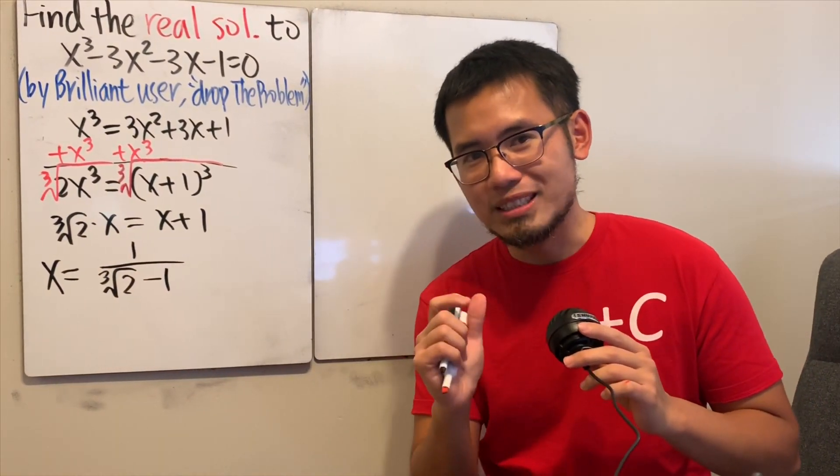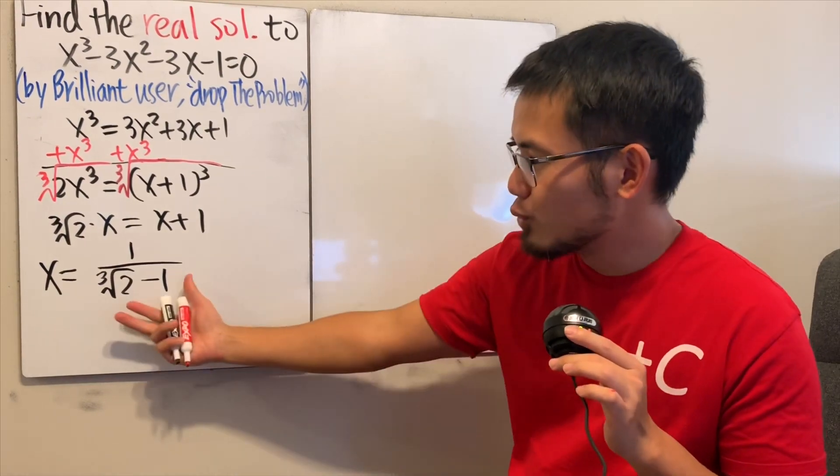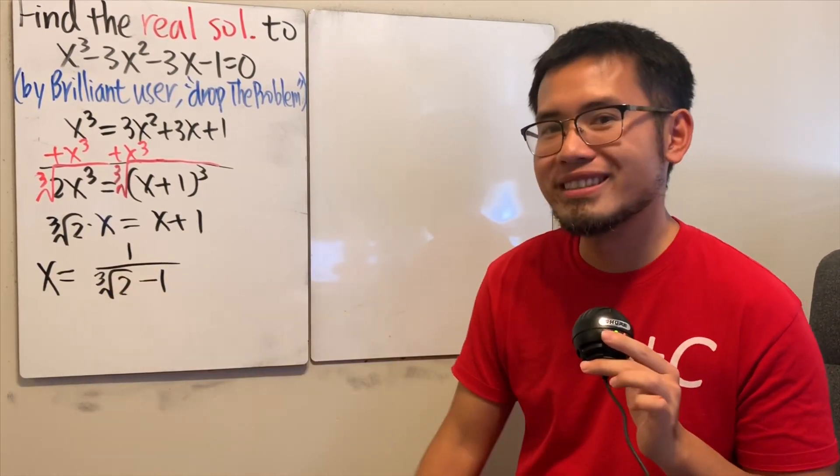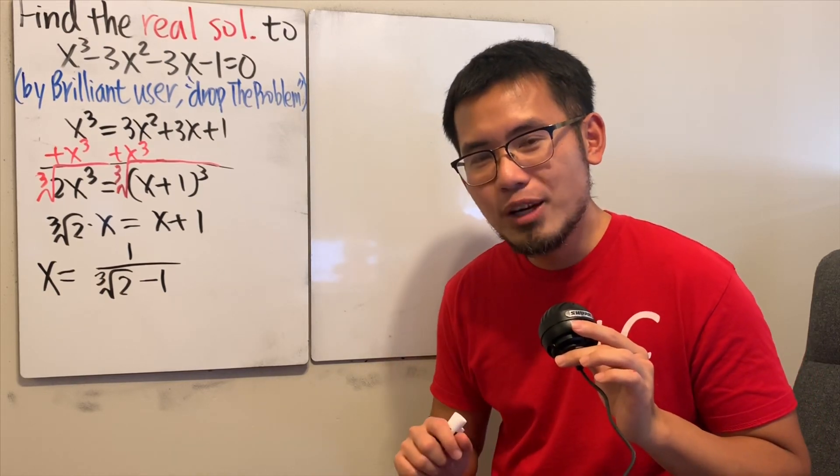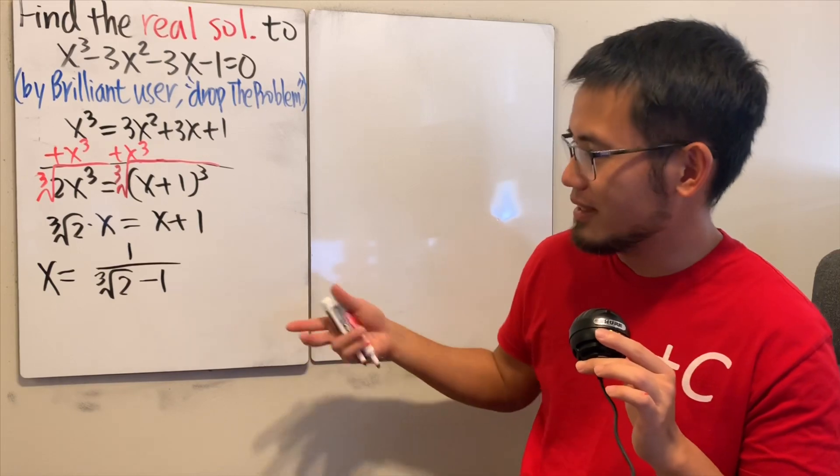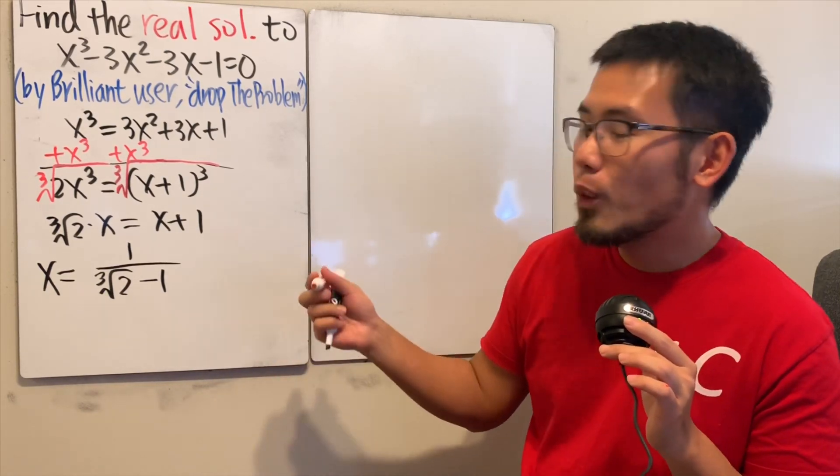But let me also ask you a small question. How would you rationalize the denominator right here? We have a cube root. Well, we can still multiply by the conjugate, but the conjugate here is much more complex than the square root situation.